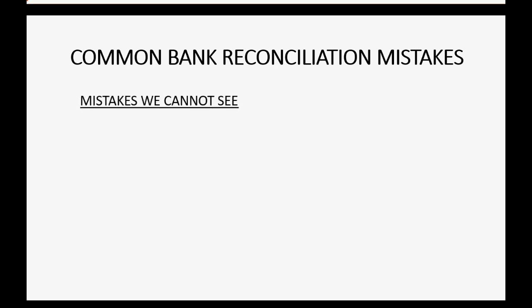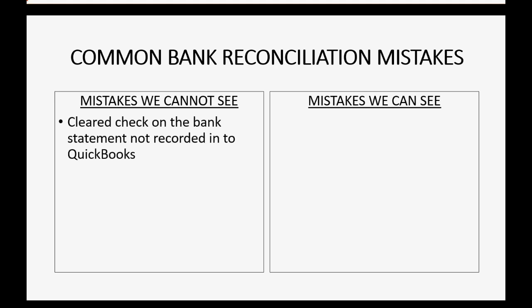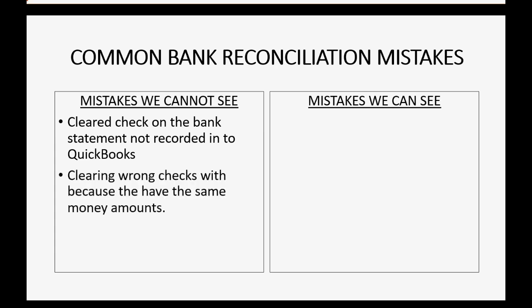Common bank reconciliation mistakes can be broken into two categories: mistakes that we cannot see and mistakes that we can see. A mistake that we cannot see would be a check that cleared on the bank statement that we failed to record into QuickBooks. The more challenging invisible mistake is when we clear the wrong check because it has the same money amount as a check that did not clear.